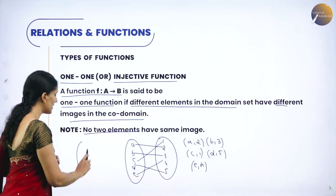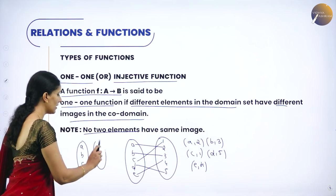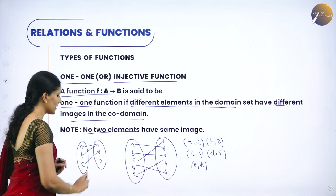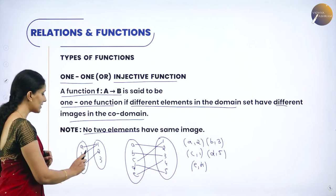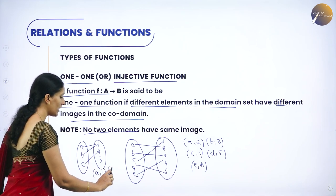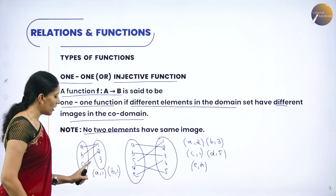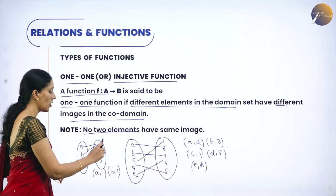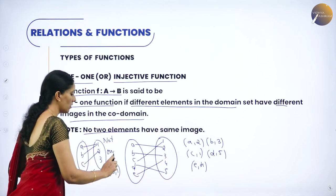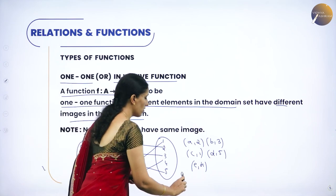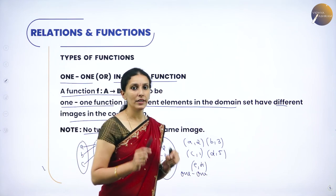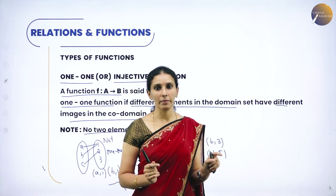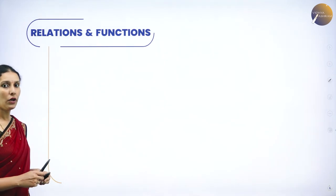Suppose set A has elements A, B, C and co-domain 1, 2, 3, and A is connected to 1, B is also connected to 1, and C is connected to 3. Here two different elements in the domain — A and B — have the same image 1. So this is NOT one-one. A function is one-one only when all the elements in the domain set have different images in the co-domain set.